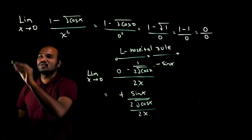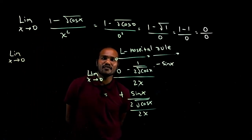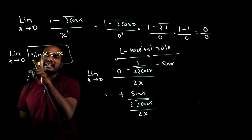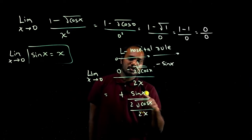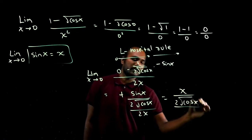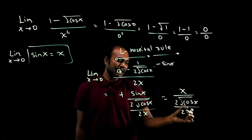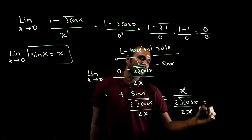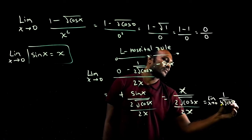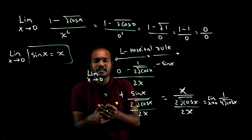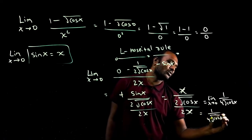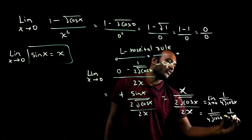Now, whenever we have limit x tends to 0, there is a standard form: sin x divided by x equals 1, so we can replace sin x with x. This x cancels with the x in the denominator, and 2 times 2 gives 4 in the denominator. So we get limit x tends to 0 of 1/(4√cos x). Substituting x = 0: cos 0 = 1, so the final answer is 1/4.